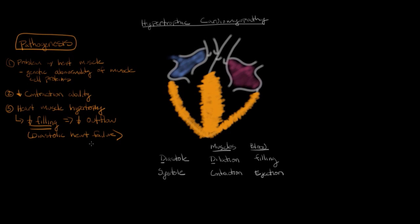There's another problem in hypertrophic cardiomyopathy that makes it very dangerous: intermittent outflow obstruction. The hypertrophied septum causes a narrowing of the outflow tract from the left ventricle. Blood normally flows out through the aorta, but when this space is narrowed, you get a blockage. It's intermittent because it depends on how hard the heart is working — for instance, when heart rate is very fast, the diastolic filling period is shorter, leaving even less blood in the ventricle.